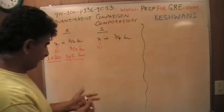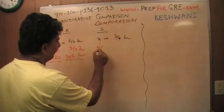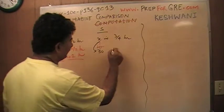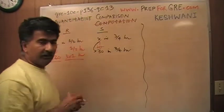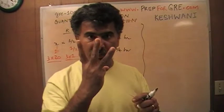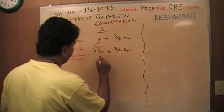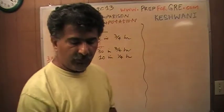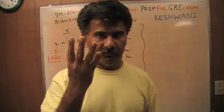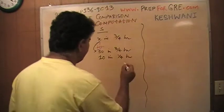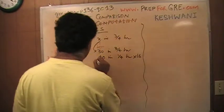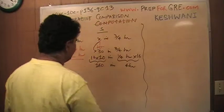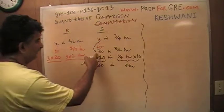Instead of 10, I'm going to plug in 30 for X. So machine S does 30 in three-quarters of an hour. If it does 30 in three-quarters, then it does 10 in one-quarter. They're asking how many it will do in four hours. There are four quarters in one hour, so sixteen quarters in four hours. Multiply 10 by sixteen: machine S does 160 in four hours.